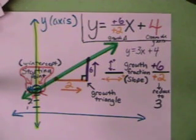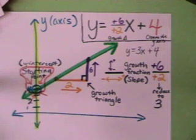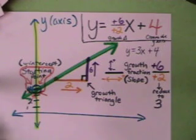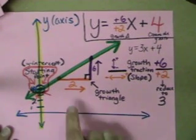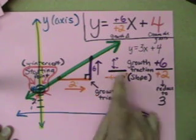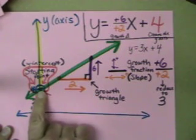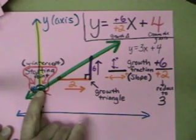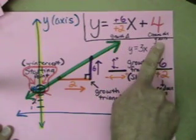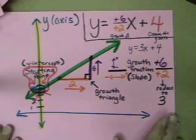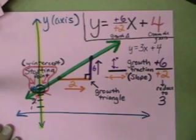Now this is what we're going to do in the next video — go over a bunch of examples of how to do this, and then how to reverse the process. But I wanted you to have a good idea of how we found a growth triangle, how we found the starting point or y-intercept, and where they go in the rule. With that, we should be able to do the next ones fairly fast. Hope this helps.